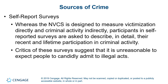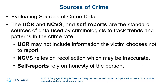Whereas the NCVS is designed to measure victimization directly and criminal activity indirectly, participants in self-reported surveys are asked to describe in detail their recent and lifetime participation in crime. Critics of these surveys suggest: is everybody really going to be willing to tell you candidly and admit that they took drugs, committed theft, or did a robbery? So when you evaluate the sources of crime data — the UCR, the NCVS, and the self-reports — those are the big ones. The UCR may not include crimes victims choose not to report; the NCVS relies on recollection, which may be inaccurate; and self-reports rely on honesty.